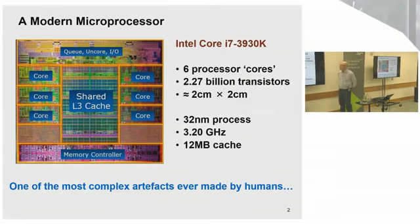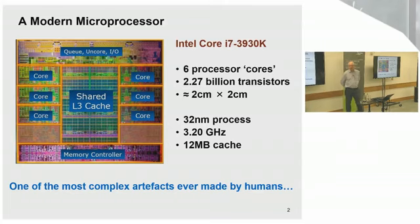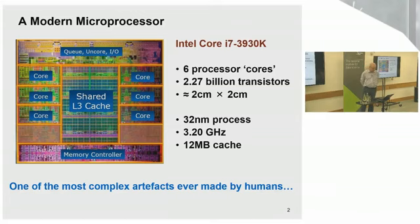Here's the Intel Core i7 — a slightly old version. This is a modern microprocessor, probably one of the most complicated artifacts ever created by humans. It's extremely challenging to design in a bug-free and correct fashion. Nonetheless, they come out regularly and they work, largely due to the skill of engineers and physicists who make these things operate.